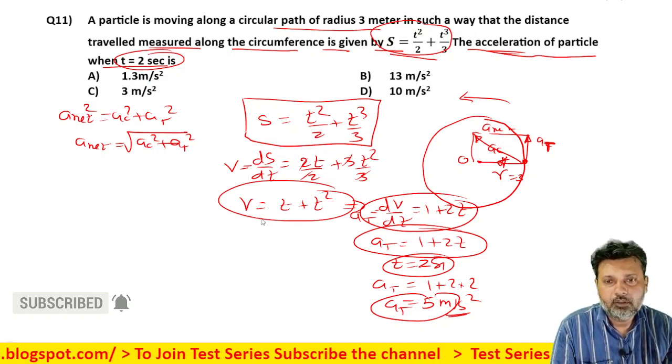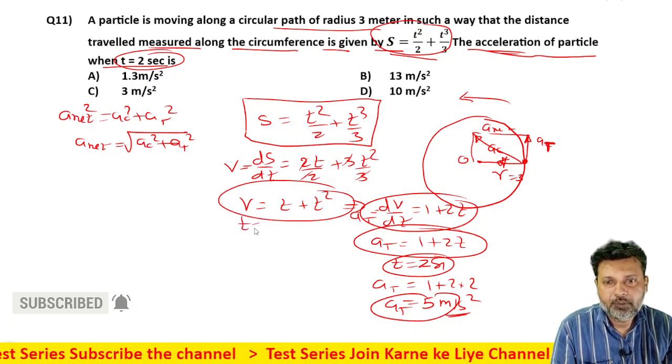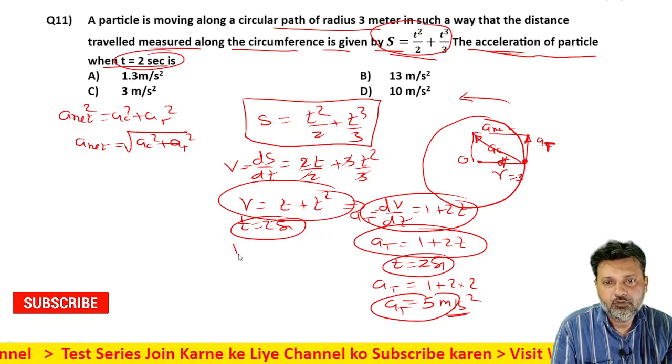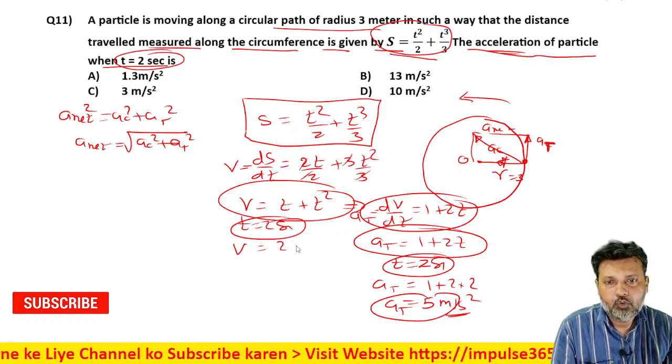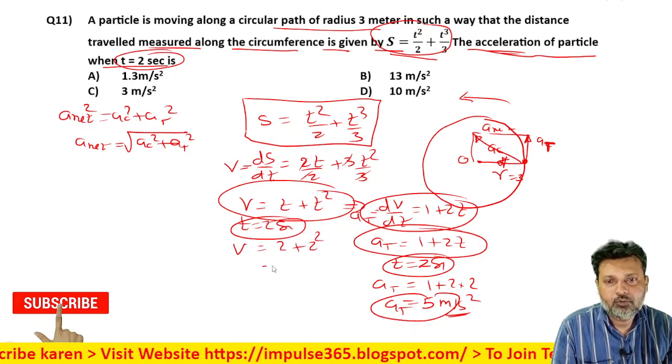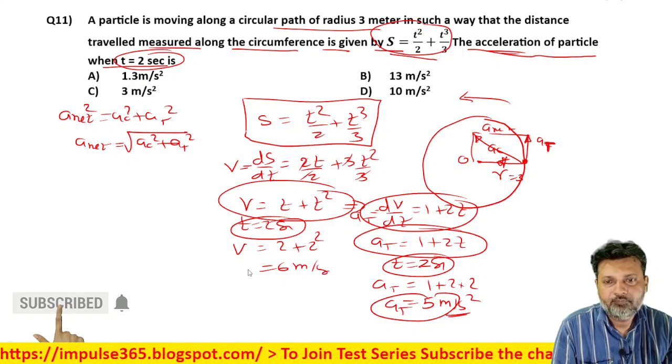Now what will be the velocity? At t equals 2 seconds, velocity will be how much? Two plus two squared, four plus two, six. Six meter per second will be the velocity.